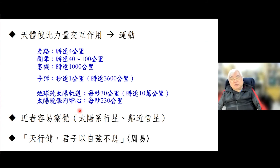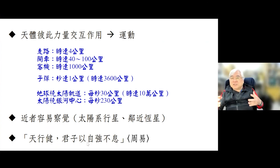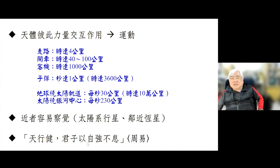以时速来说，这比我们所知道的子弹、客机快得多。而太阳也绕着银河中心在转，每秒钟甚至于可以达到230公里，一秒钟就走台湾从南到北一半以上，非常非常快的速度。比较近的我们能够察觉这些运动，比较远的要用精密的仪器才有可能。这验证了《易经》里面说的「天行健，君子以自强不息」——天上的东西其实都一直在动，我们人当然也要不断进步了。好，今天说到这里。